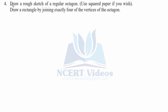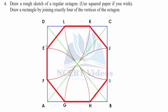Question four: draw a rough sketch of a regular octagon — use squared paper if you wish — and draw a rectangle by joining exactly four of its vertices. We demonstrate how to construct an octagon using squared paper. Take a square of any dimension, for example 10 millimeters.